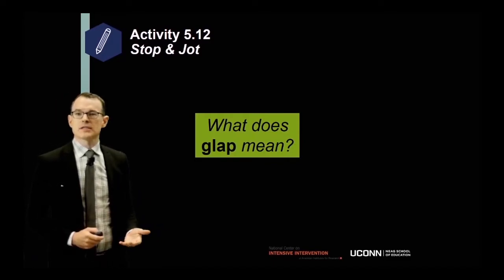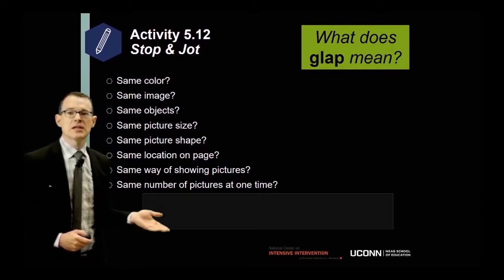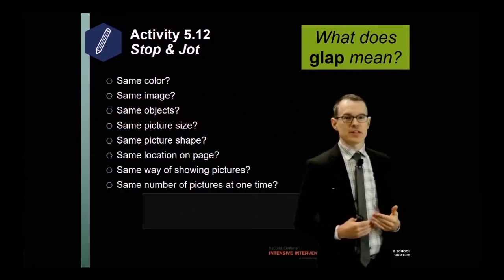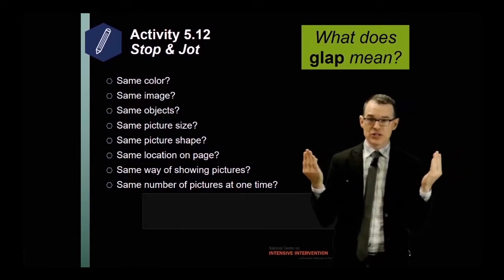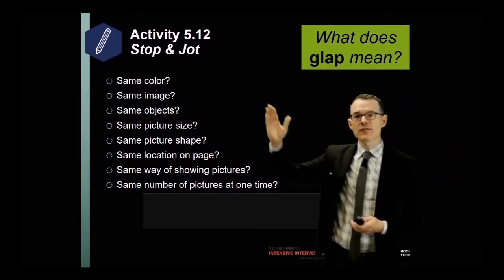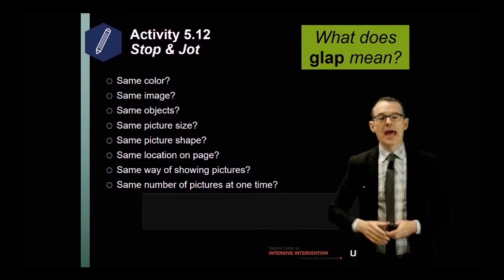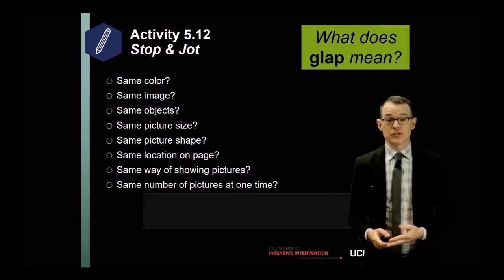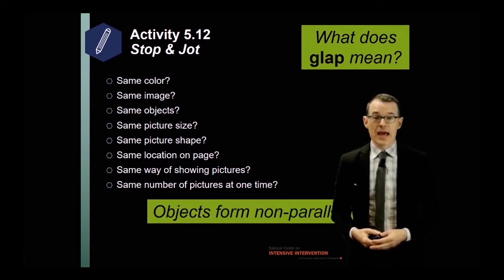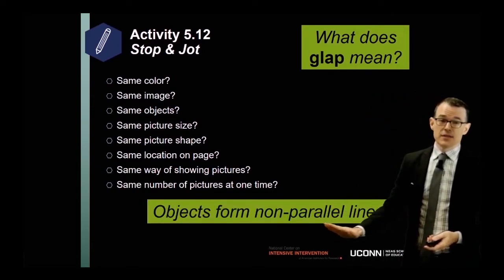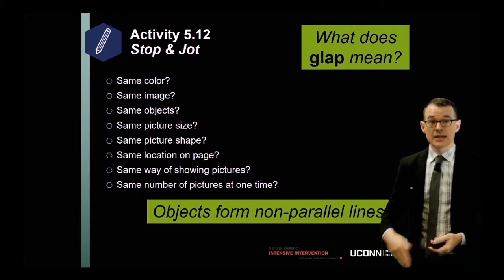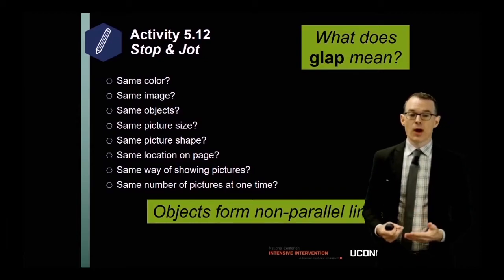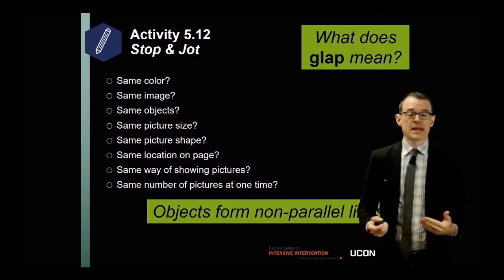Let's now talk about what glap means. I can imagine any number of things you could have imagined glap meant based on the kinds of images I showed you — there was a wide range. Some of you probably figured out that actually the idea here was simply that the objects form non-parallel lines. If they form parallel lines, then it was not glap. Some of you probably figured that out, and others of you may not have.